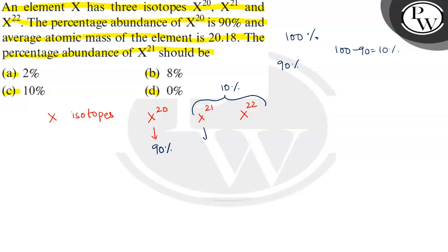And then X^21 is considered as X and remaining is 10 minus X, the remaining percentage of X^22. We have a formula for average atomic mass. Average atomic mass is equal to